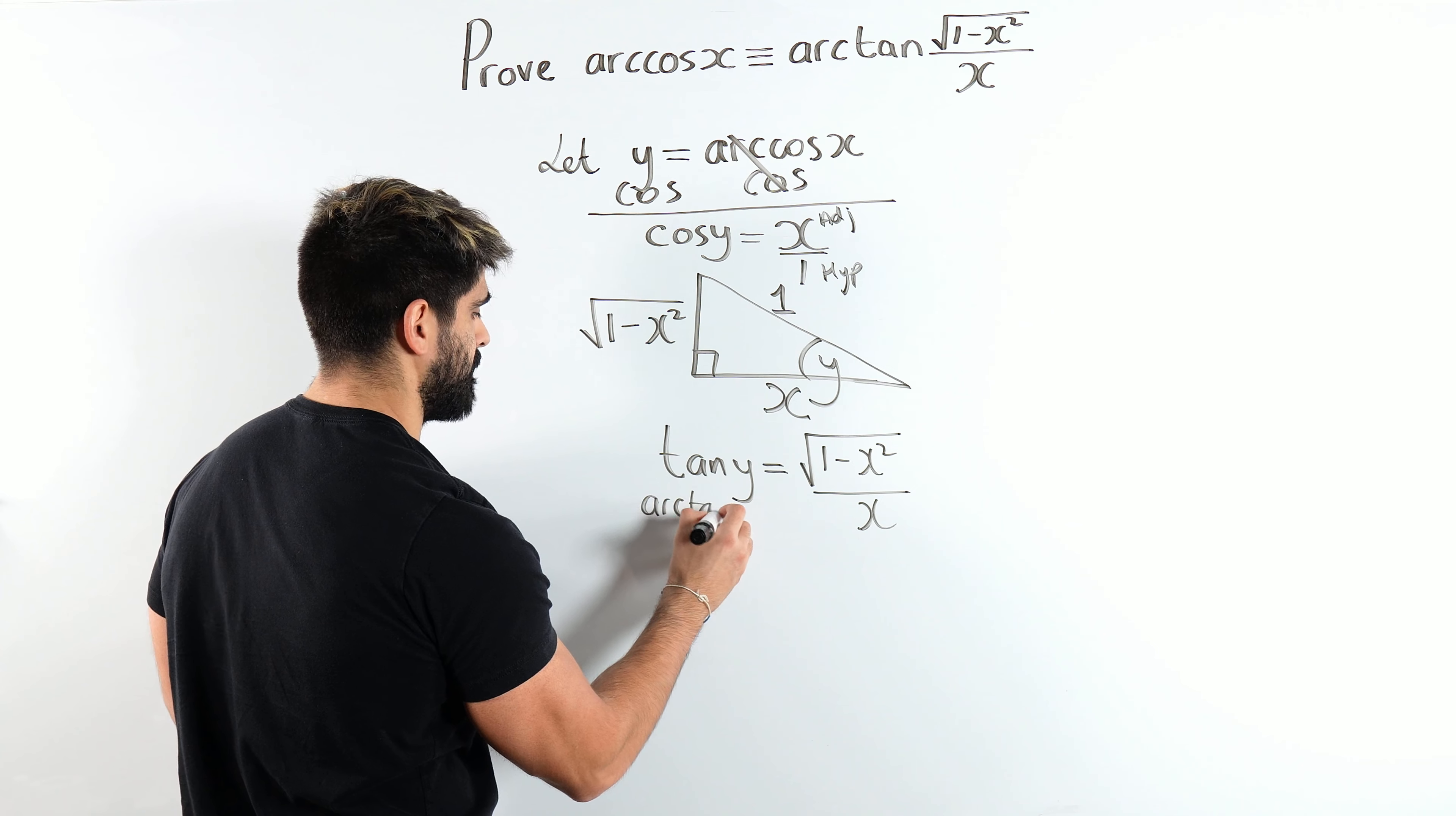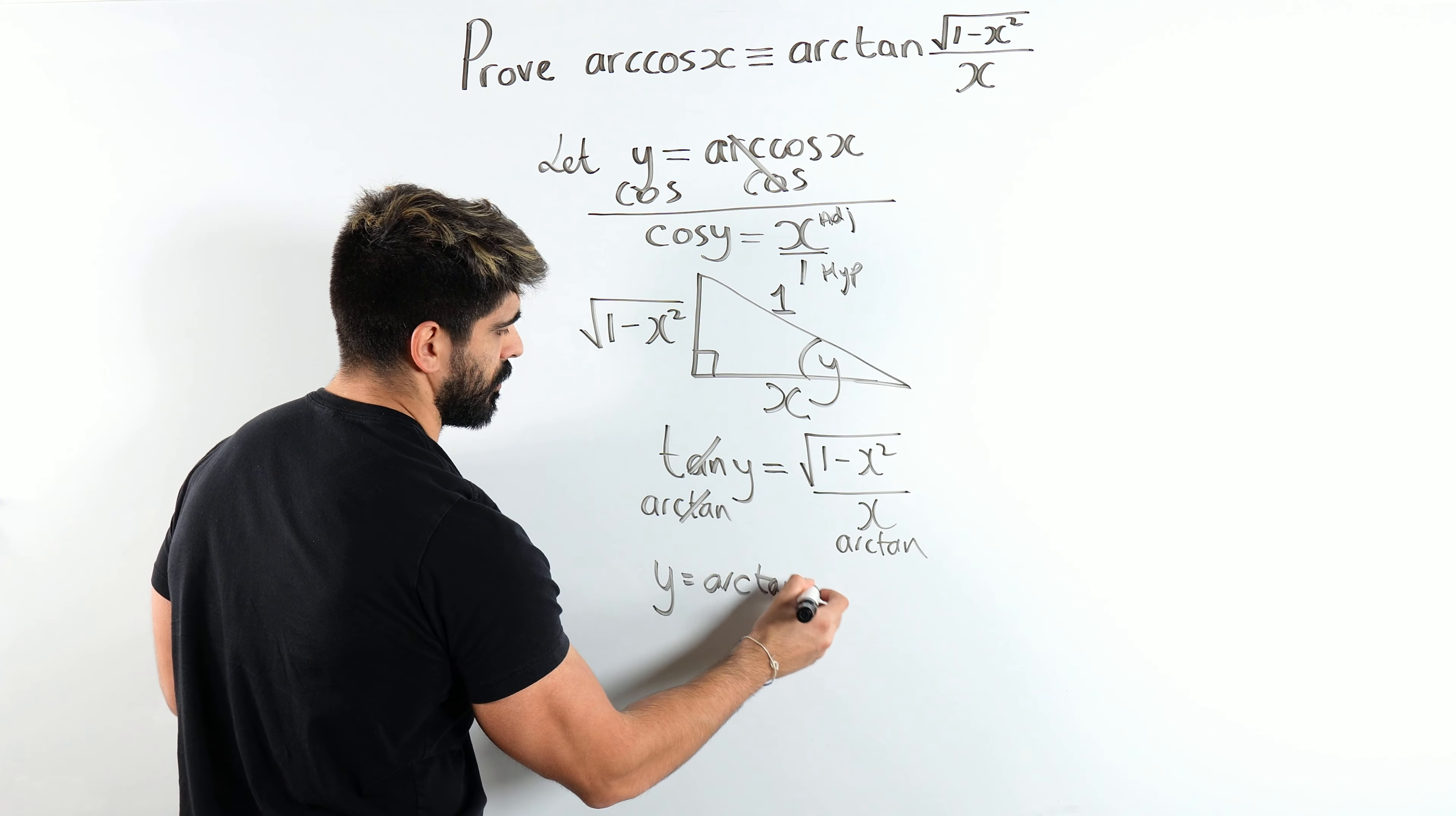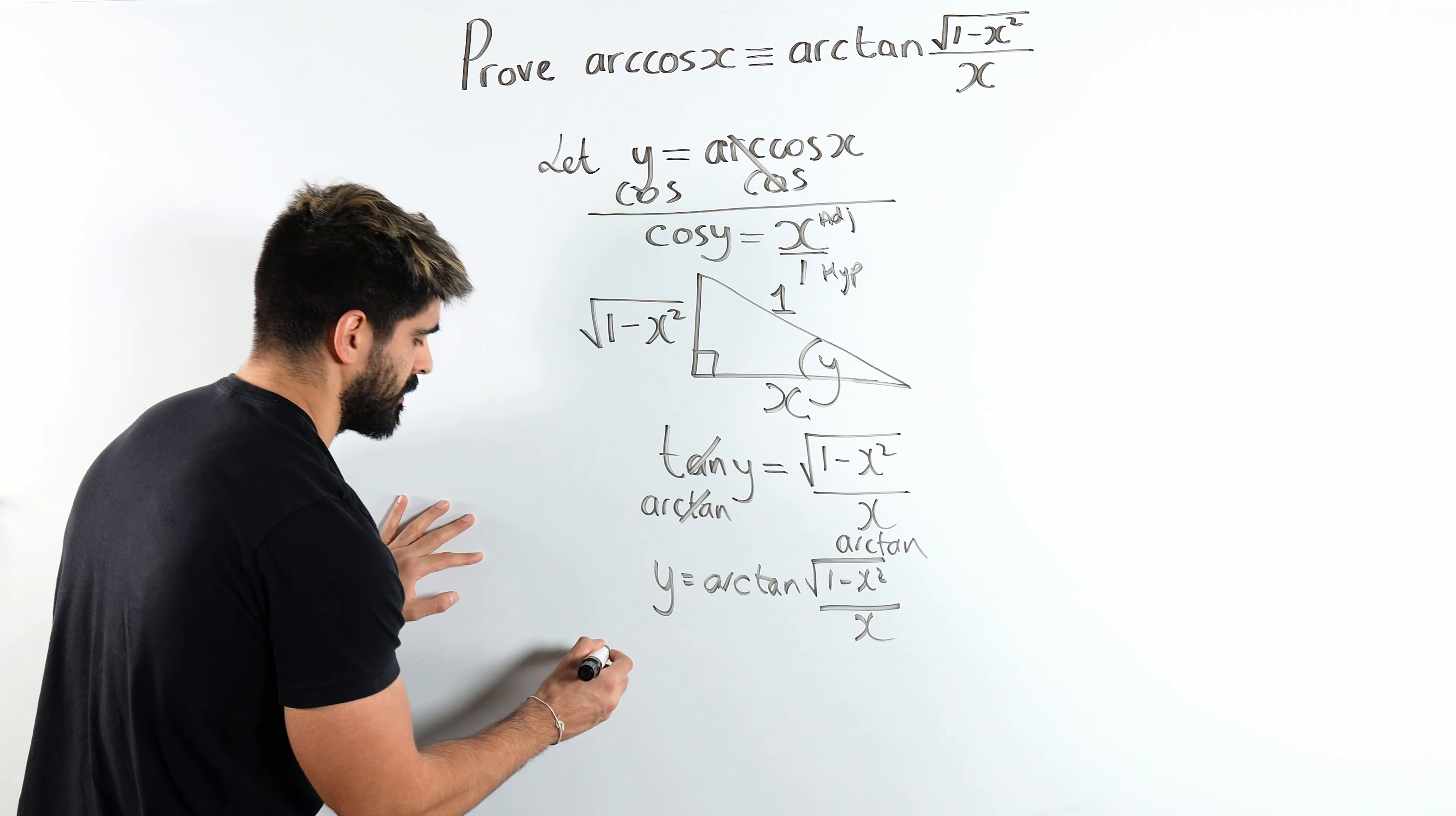Which now I can work out what y is. So doing the inverse, what's the inverse of tan? It's arctan. So that cancels. We're left with y is arctan of root 1 minus x squared over x.